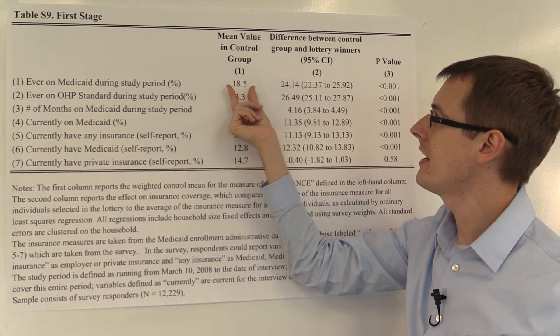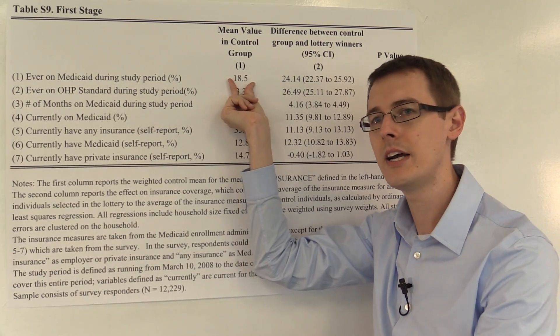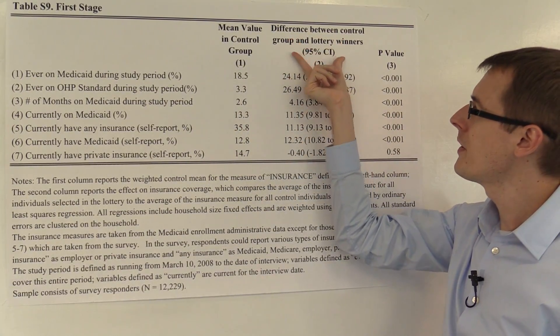Here, we see that in the control group, some people still managed to receive Medicaid, even though they weren't assigned to it.